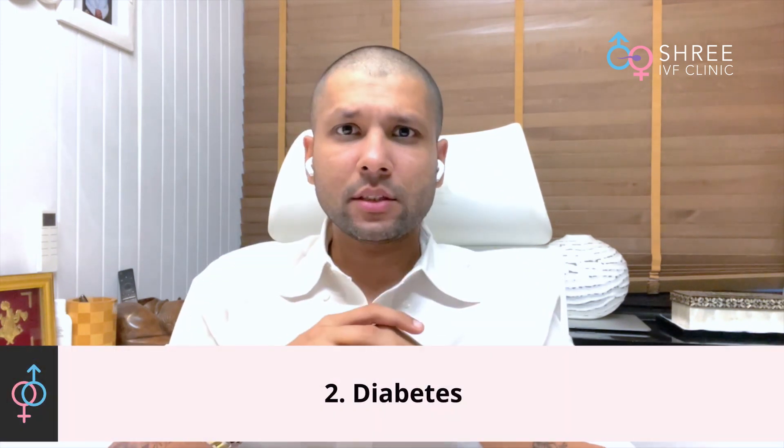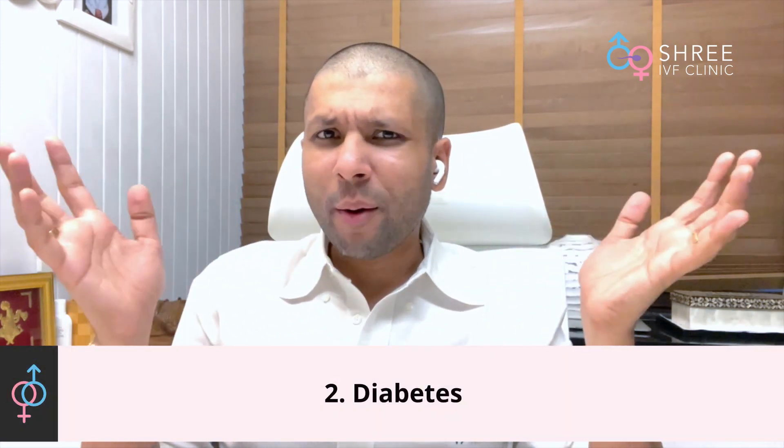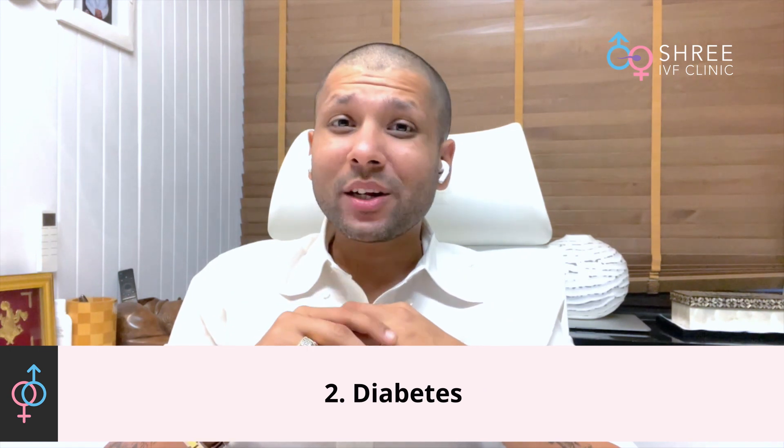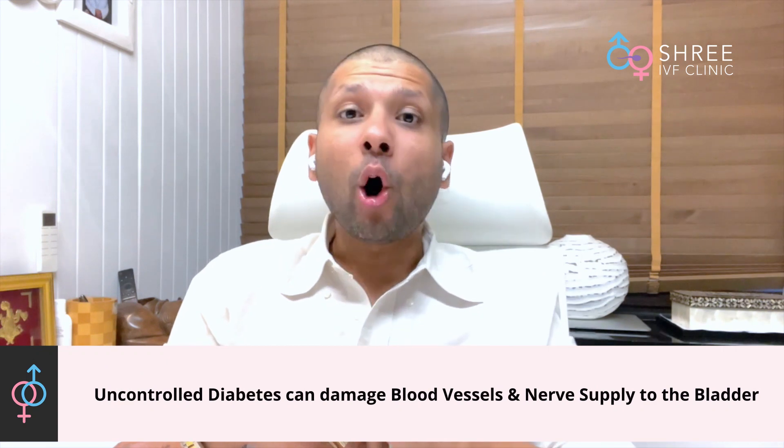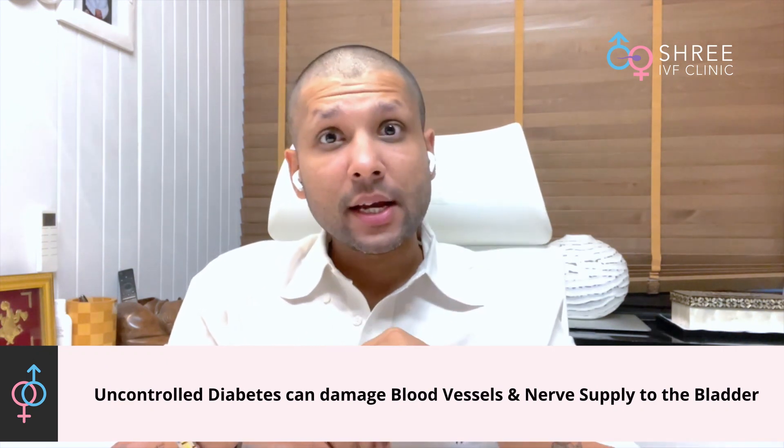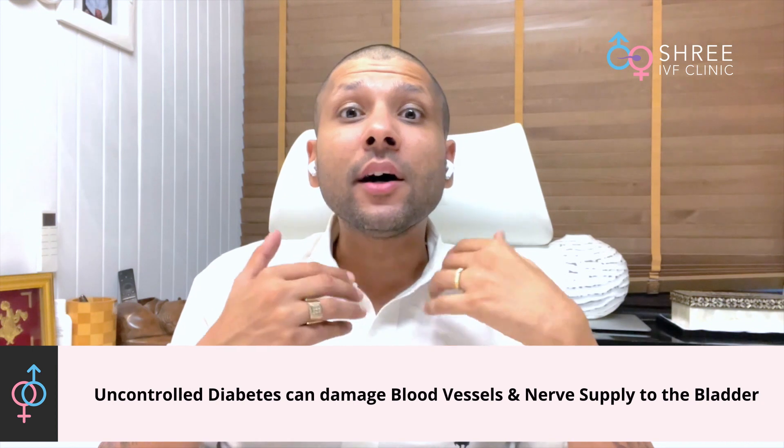The second most common cause in our country is diabetes. We all know how prevalent diabetes is in India. Normally we associate diabetes only with blood sugar or the pancreas, but uncontrolled or severe diabetes can also affect blood vessels and the nerve supply to the bladder. Because of this, women develop urge incontinence as the bladder lacks sufficient vascular and nerve support to control urination.